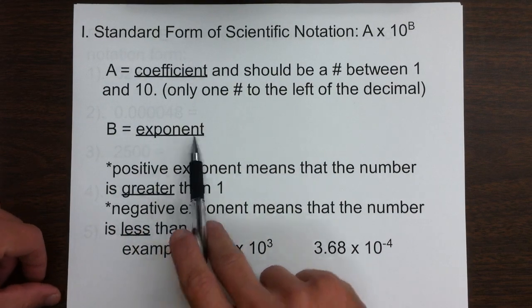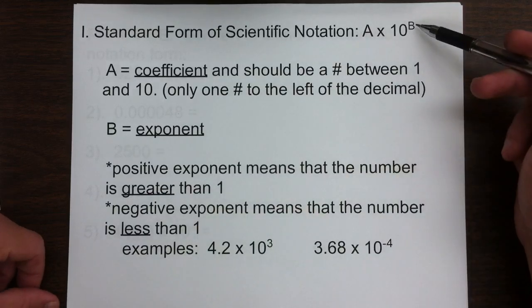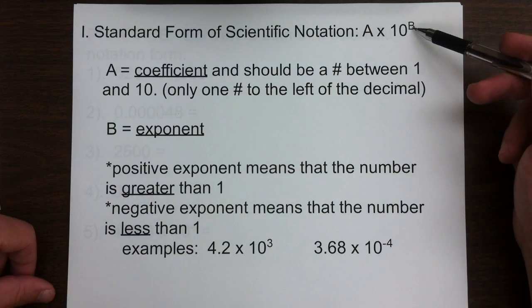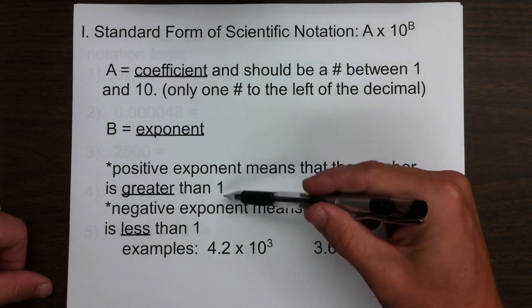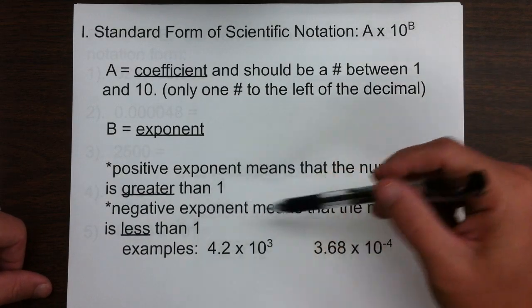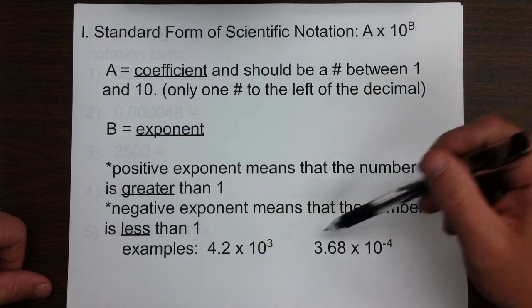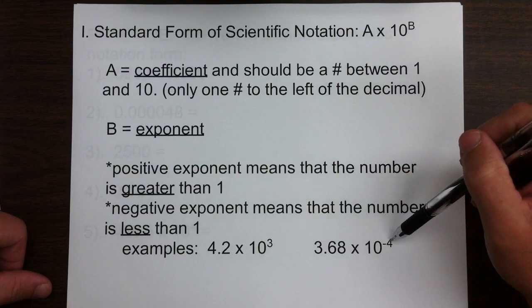Anytime we have a positive exponent, that means our number is going to be greater than 1. And when we have a negative exponent, the number is less than 1.